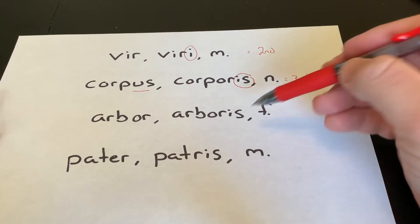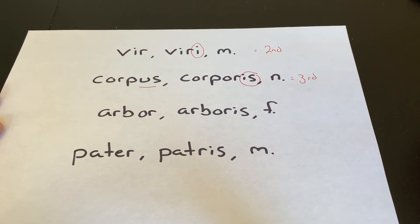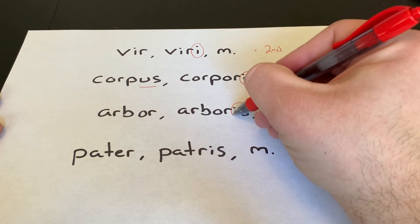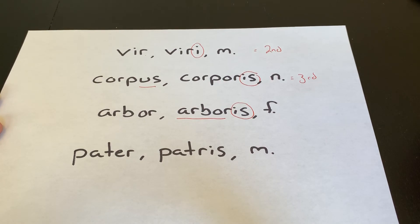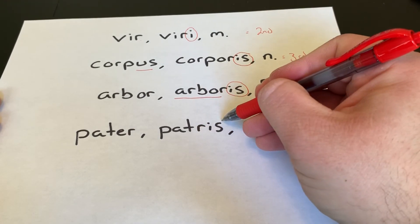And like I said before, paying attention to the genitive is also going to help you find the stem of a third declension word. Because sometimes the stem, sometimes you just add an IS and your stem looks a lot like your nominative, like with arbor. But there are also words where the stem changes when you get to the genitive.